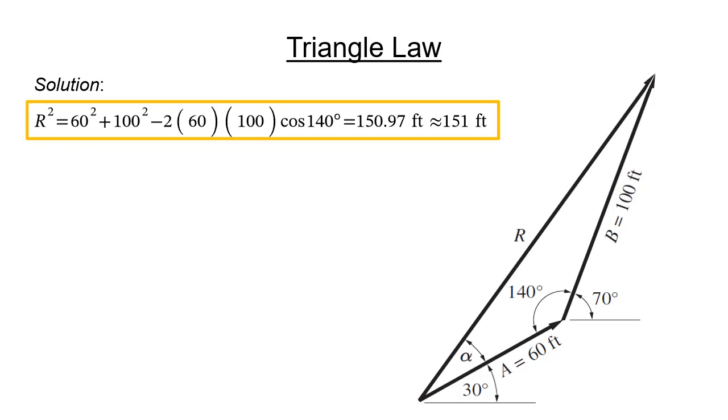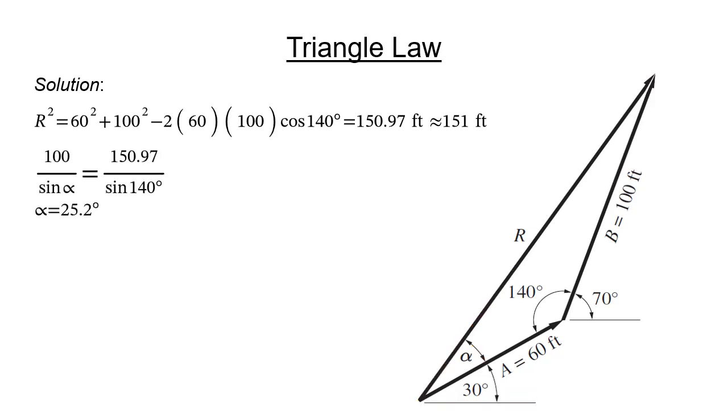The magnitude of R is directed along an angle measured from the horizontal. In this case, the angle is 30 degrees plus alpha. To calculate alpha, we can use the law of sines as shown. Calculating alpha, we get 25.2 degrees. The direction of R then is 55.2 degrees. An illustration is shown in this figure, showing the magnitude and direction of R.